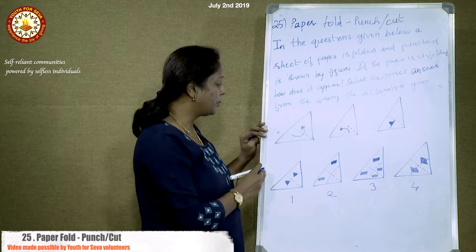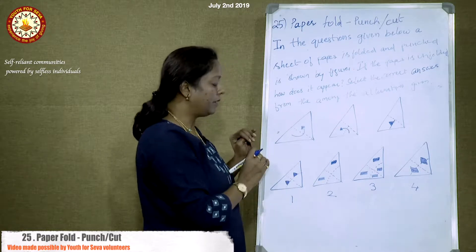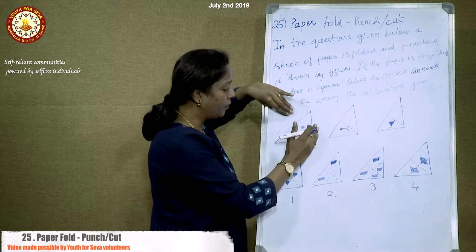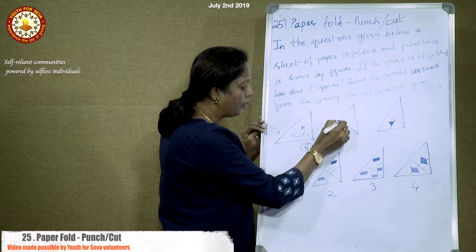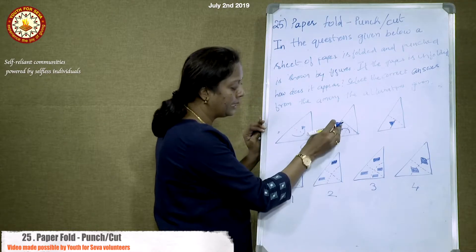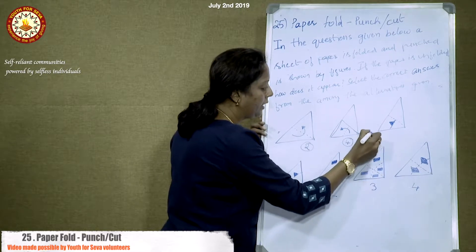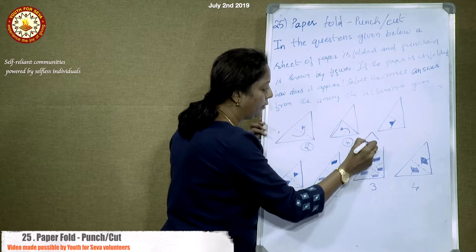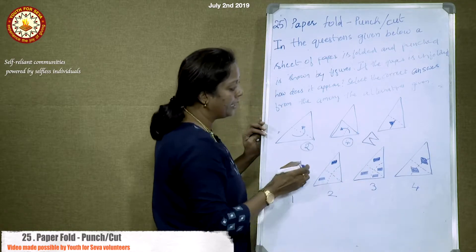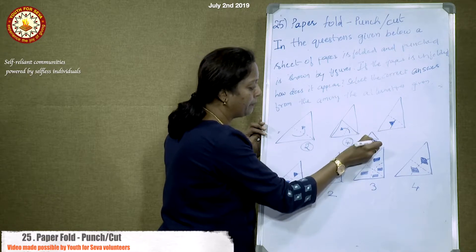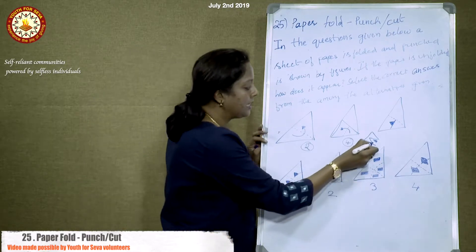When solving these problems, we have to observe how many folds we are making and how many layers of paper we are getting. First we have a triangle — when folded it became two layers, giving a folded triangle. When folded again it becomes four layers. This is the folded one, and here is where I am punching.